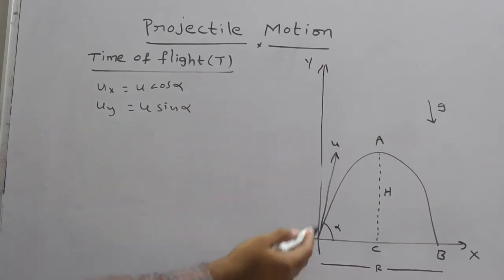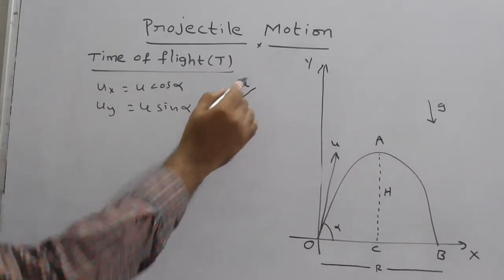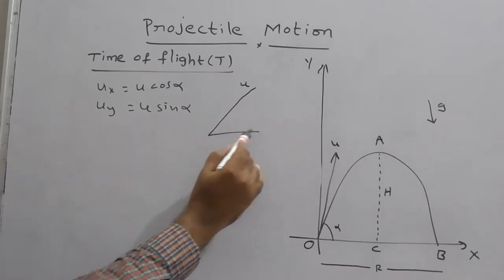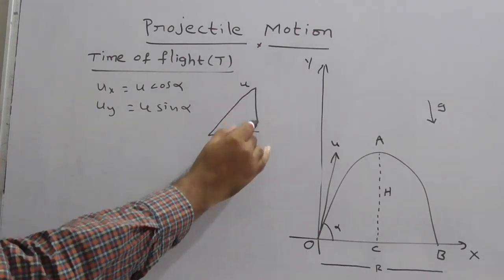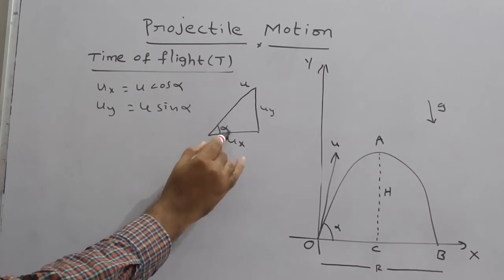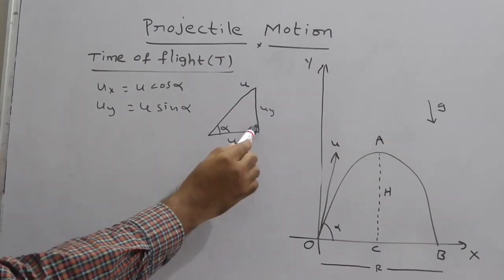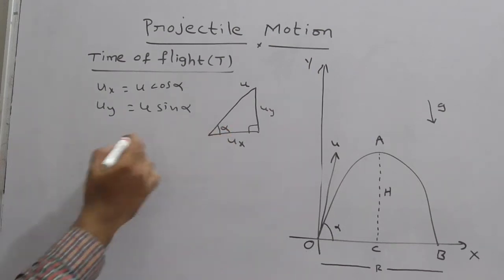So how to get this? Just observe this. For example, this is initial velocity, we are taking it as u. The velocity in the direction of x-axis, this is ux. Then in the direction of y-axis, it is uy. So clearly mentioned here, angle is alpha. Now, x and y here you get 90 degrees. So what is cos alpha from here?